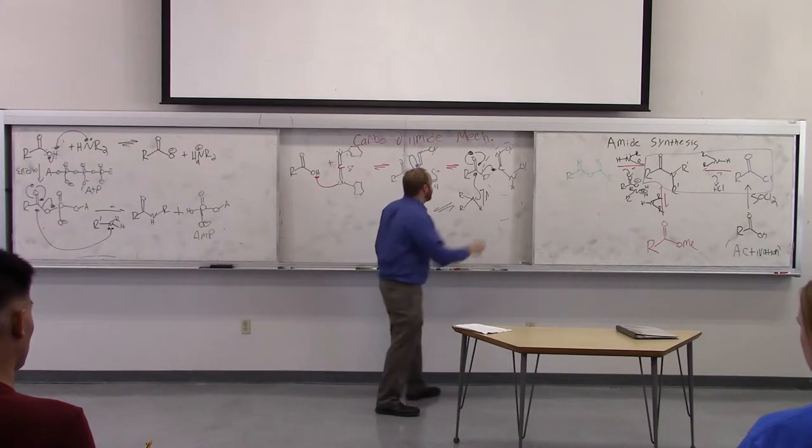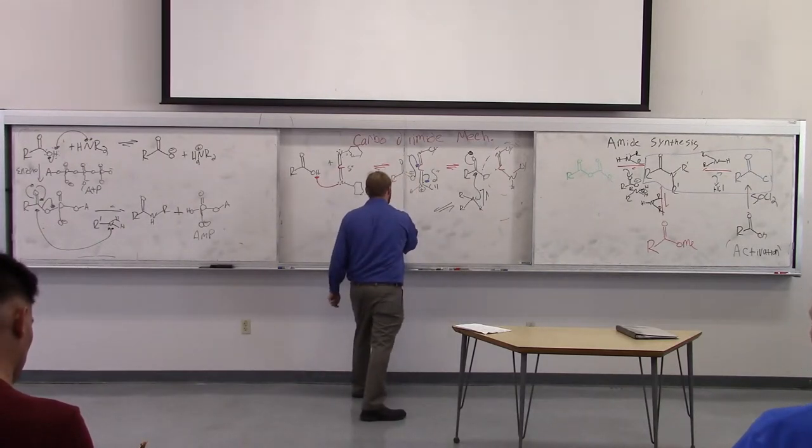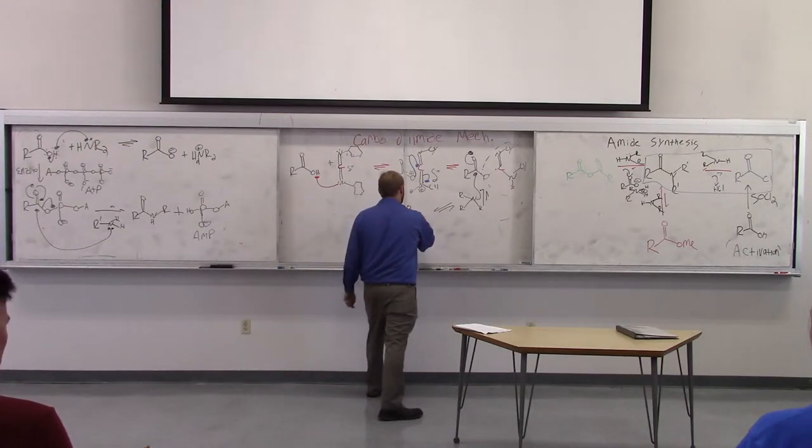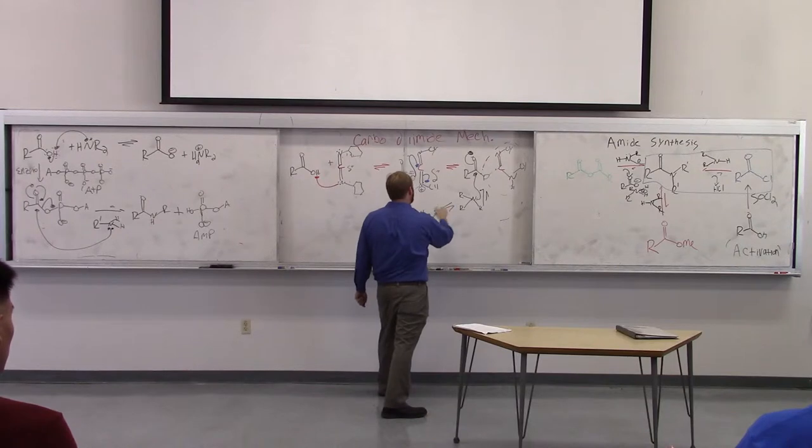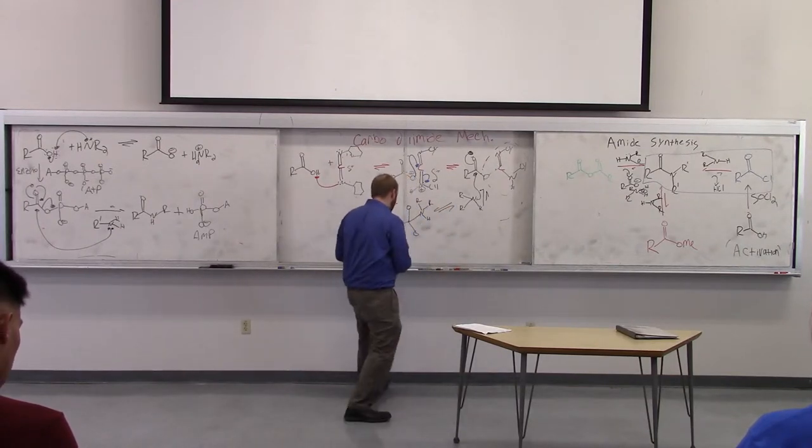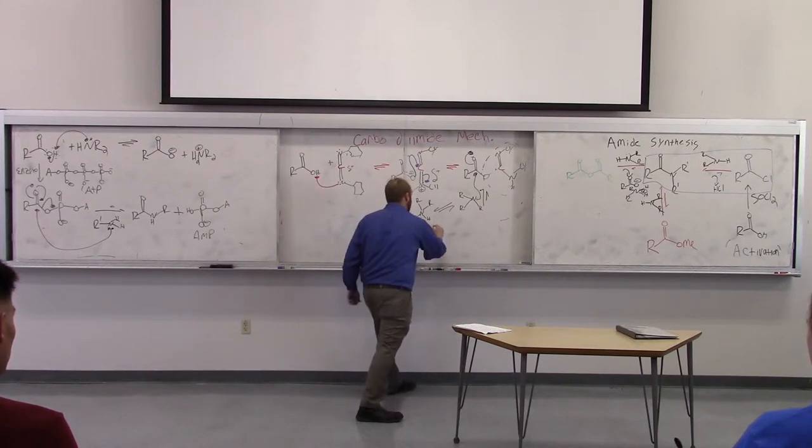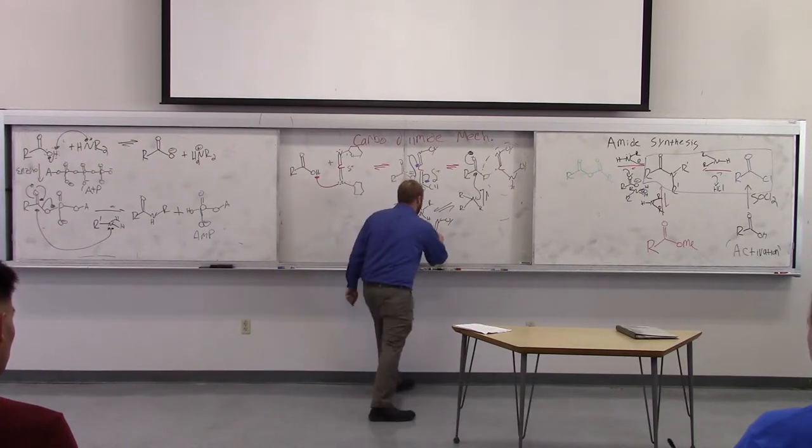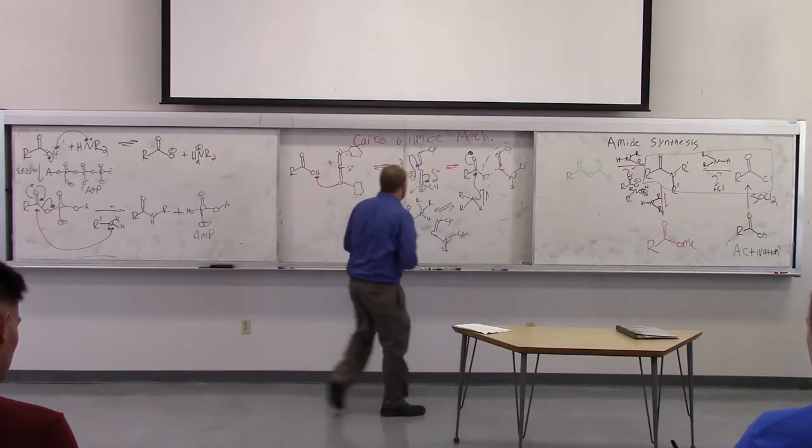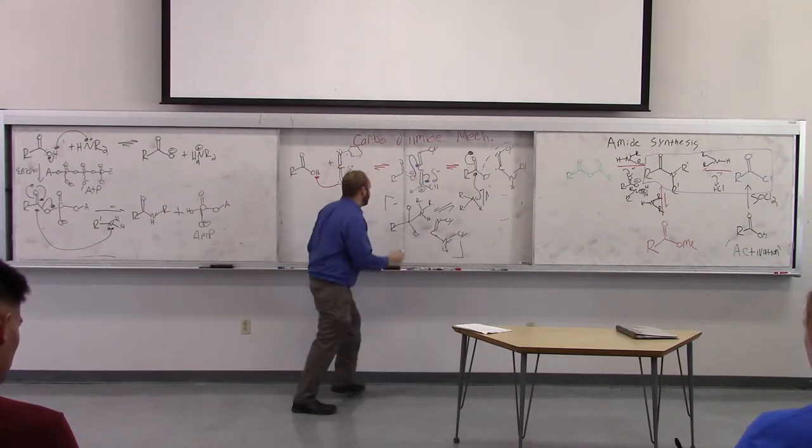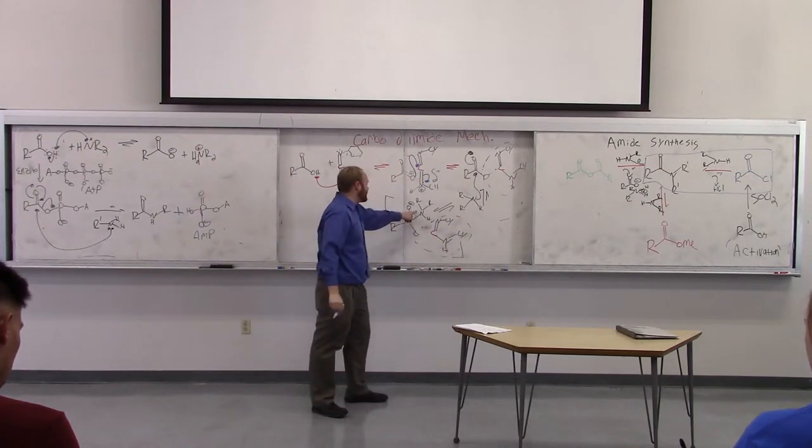Actually, you know what? I'm going to draw the tetrahedral intermediate out. Just because the first time I'm sharing this mechanism, I think it's fair to draw the tetrahedral intermediate out. So here's our amine. All right. So here's our tetrahedral intermediate. I'm going to put it in brackets. So here's the carbon it added into. This is going to be the leaving group. This was the thing that added.